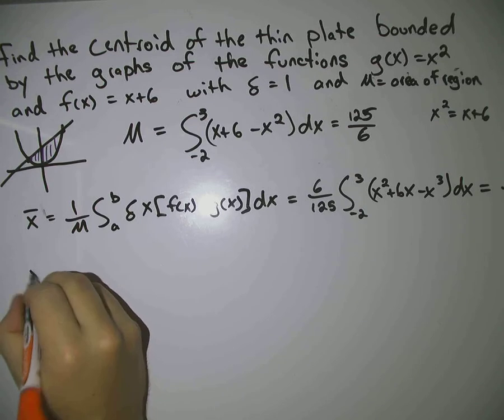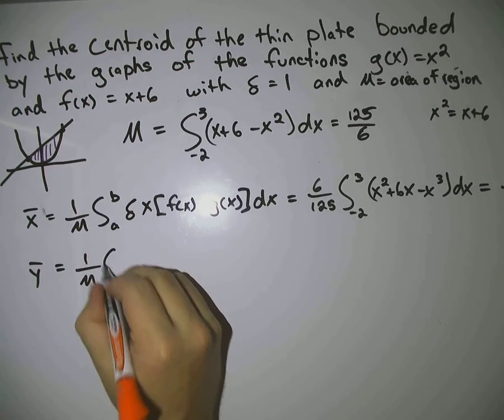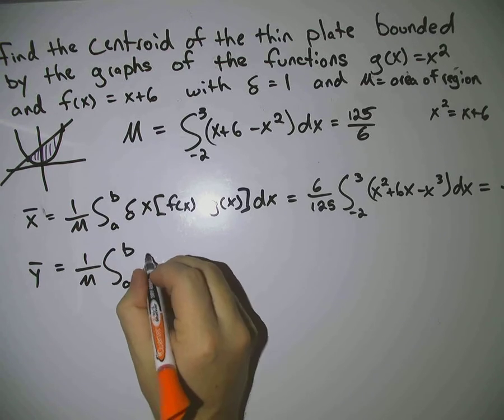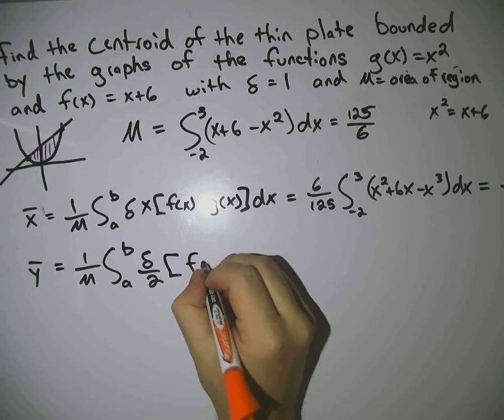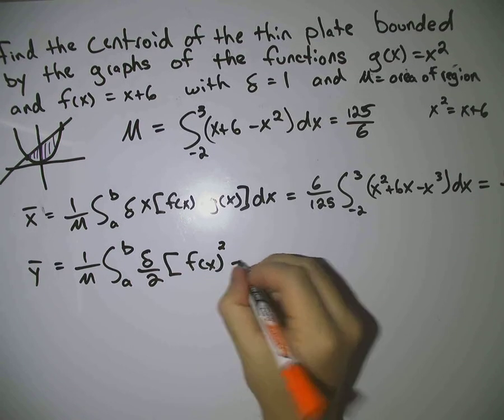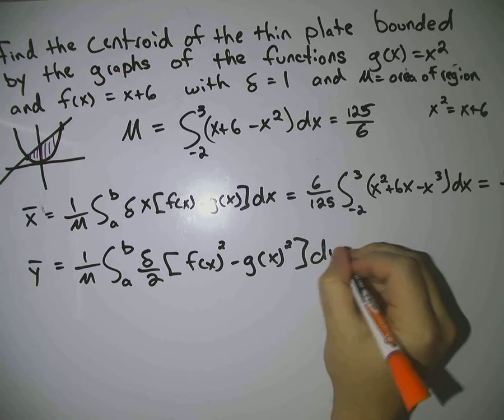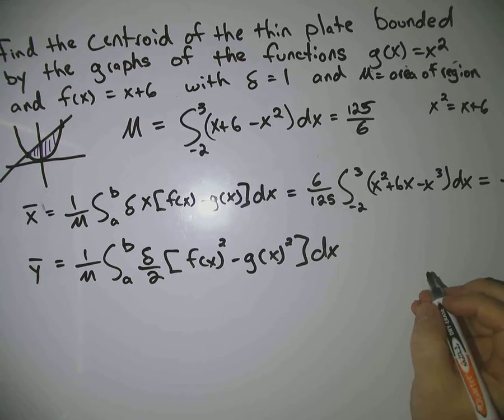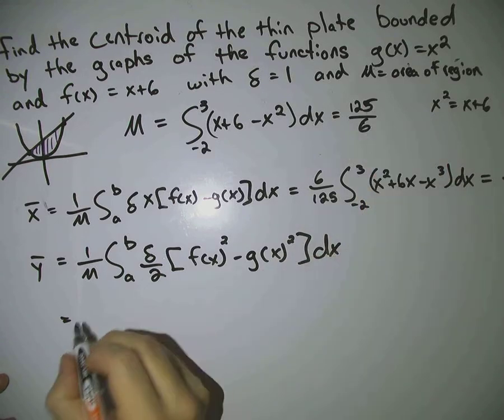y bar, 1 over m, a to b, sigma over 2. And this one is f of x squared minus g of x squared dx, which for us will be, again, 1 over m, so 6 over 125.